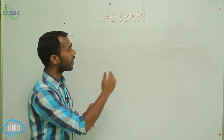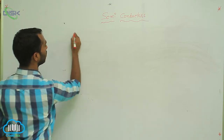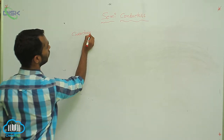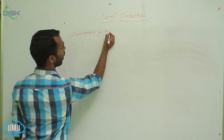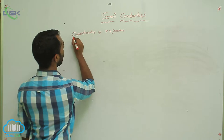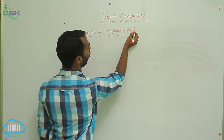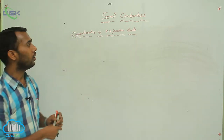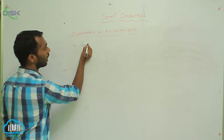Now we have to go for characteristics of PN junction diode. Characteristics means it is a graph. You have to plot a graph.